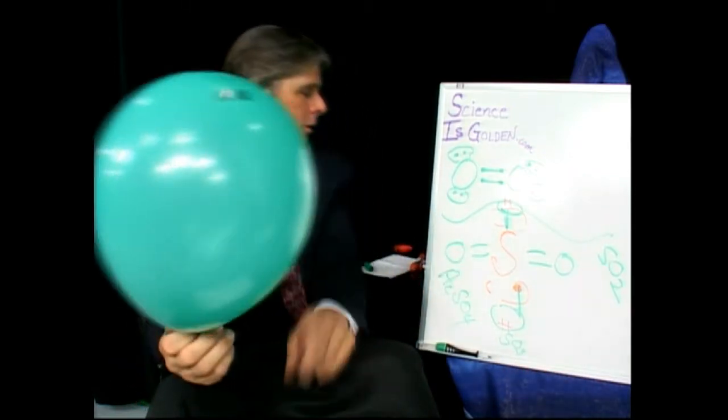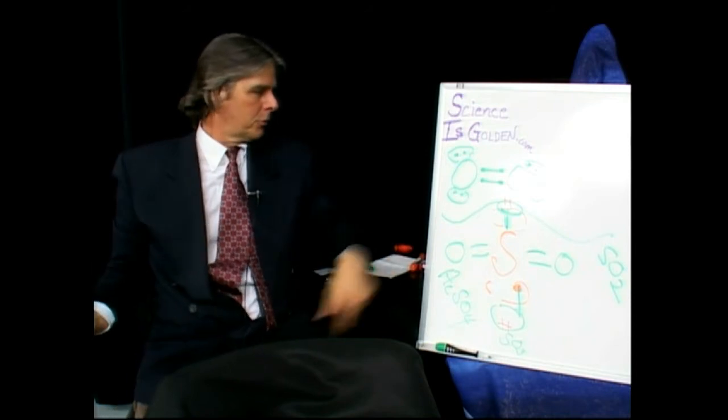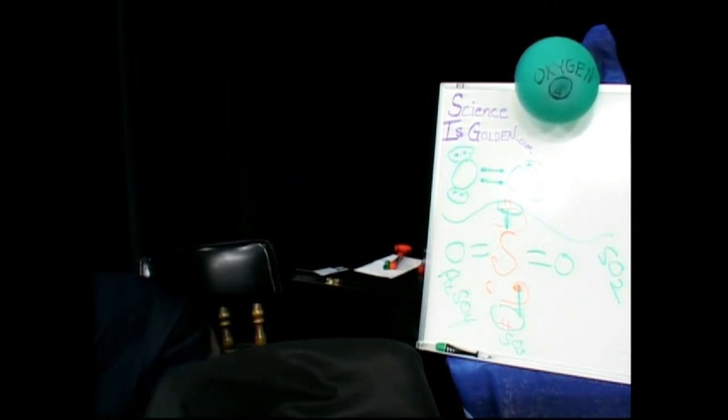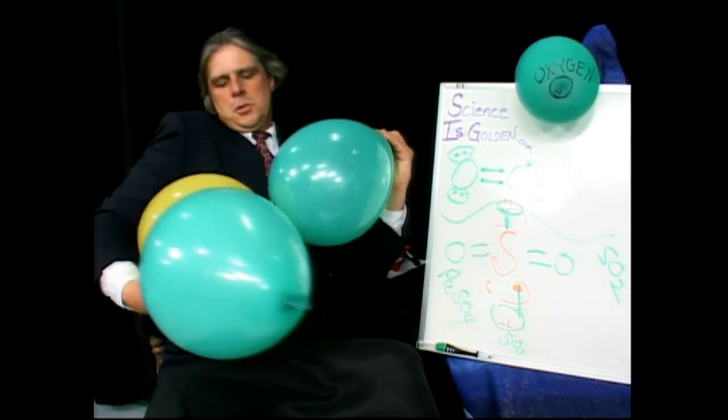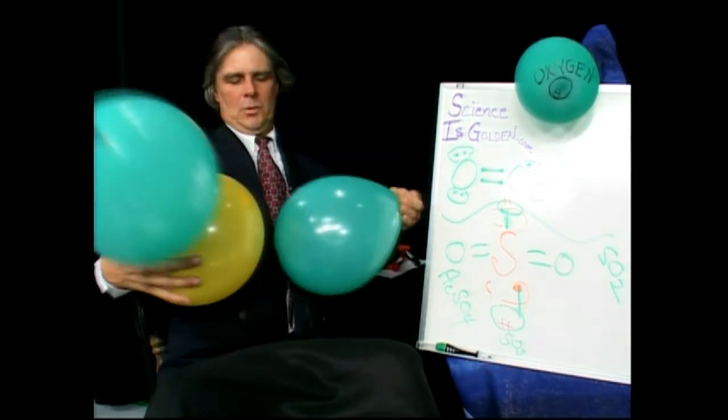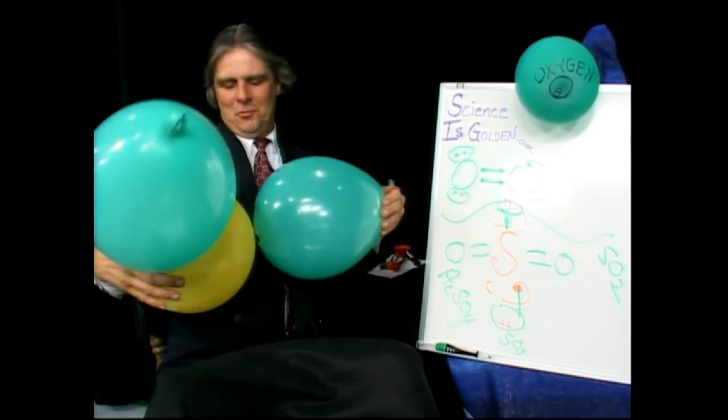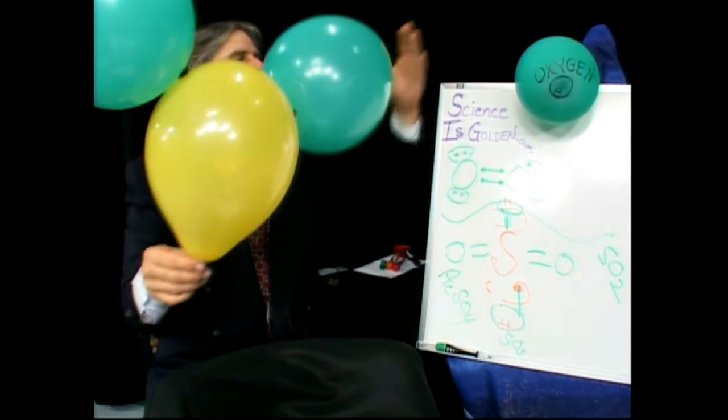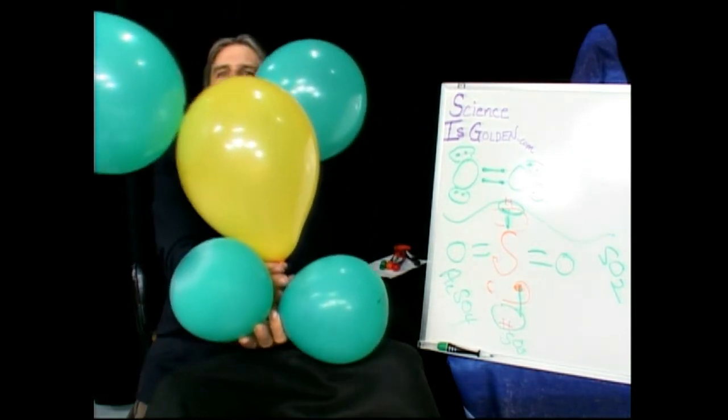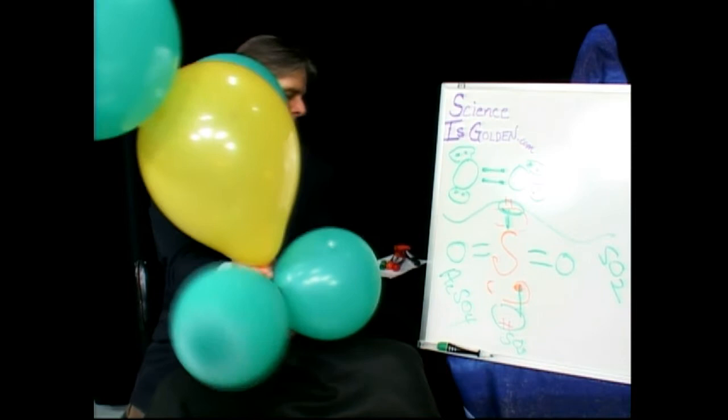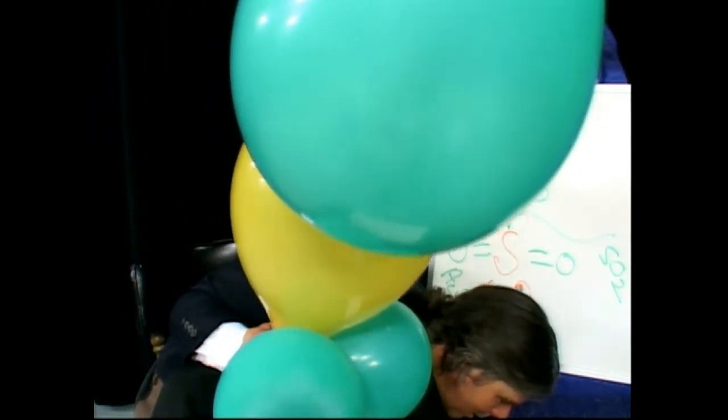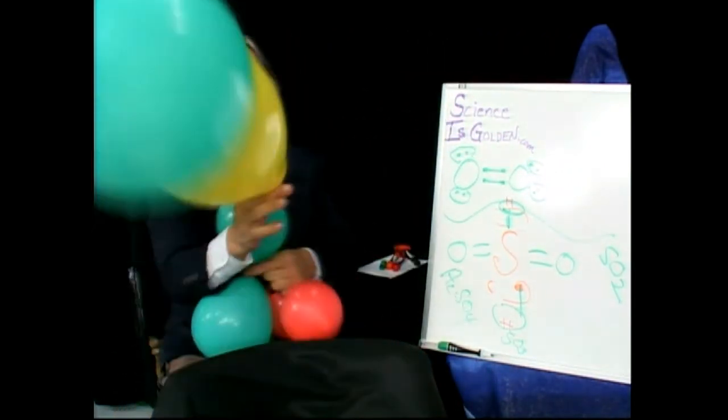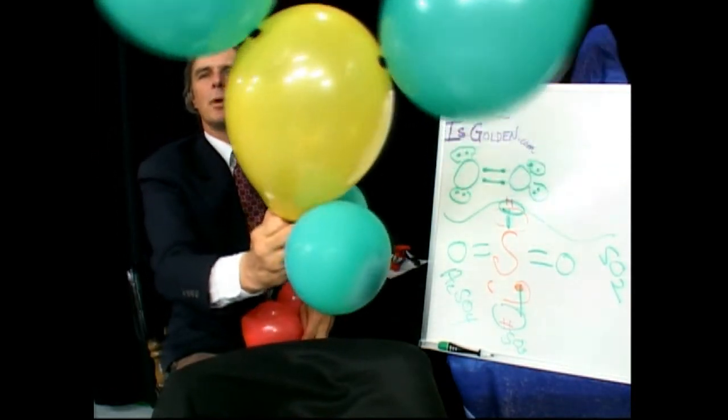That was our sulfur. How do we do the SO, SO2? Those were anti-bonding orbitals. They didn't fit. So what do we got here? H2, no, the H's aren't here. Where are my H's? Here's my H's. This is H2SO4.